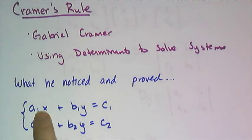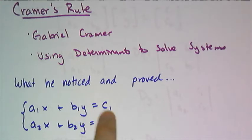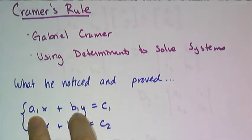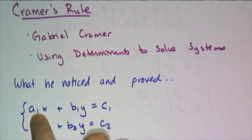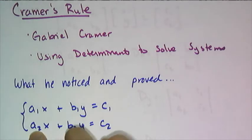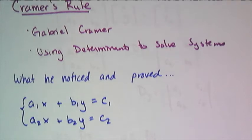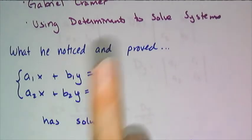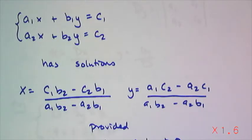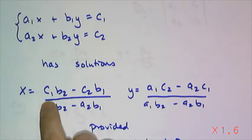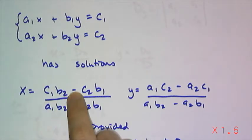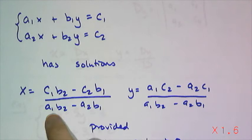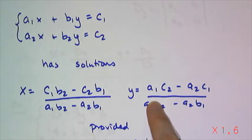So first he noticed that if I set up a system of equations where a1 and b1 and c1 are the coefficients and the constants for the first equation and then a2, b2 and c2 are the coefficients and constant for the second, he noticed that the solutions every single time would be these calculations. You take c1 times b2 subtract off c2 times b1 and put it over a1 b2 minus a2 b1 and then y would work similarly.